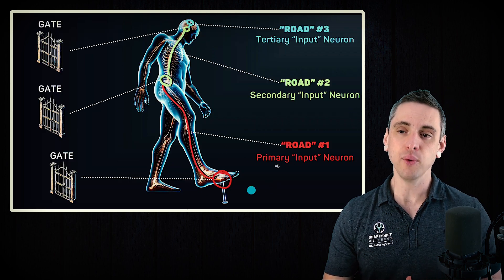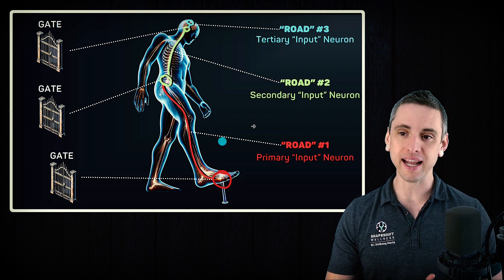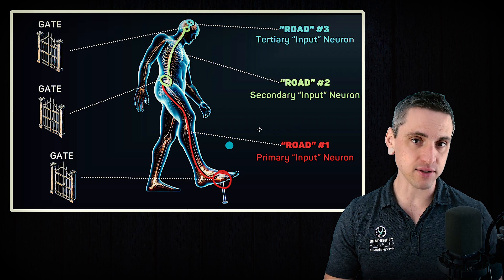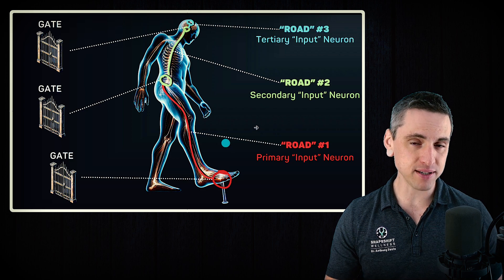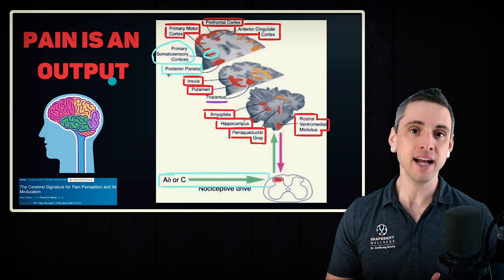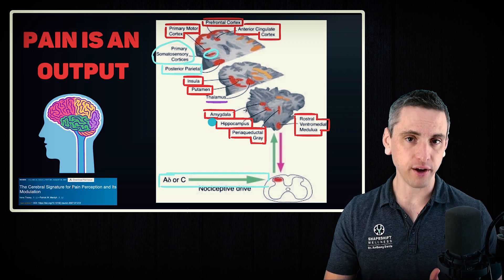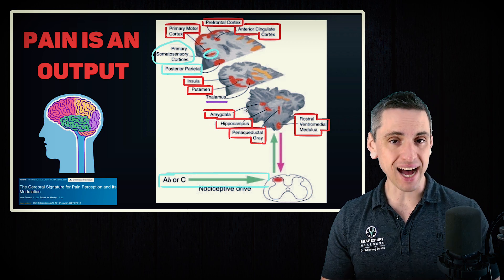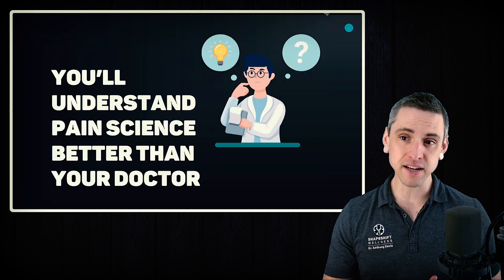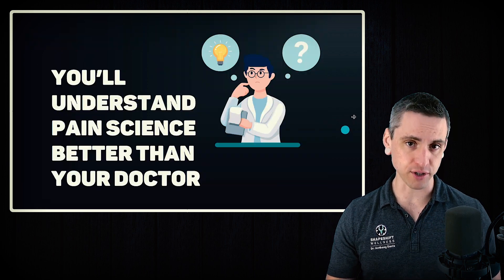You step on a nail — we have to send a signal to the brain. Along the way, it has to go through gates and roads to get to the brain. Gates are like synapses, roads are like neurons. When you get to the brain, there is a neurosignature and an output of pain. Pain is not an input; pain is an output. By the end of this series, you will understand pain science better than your doctor.